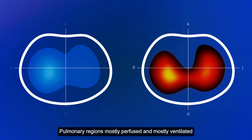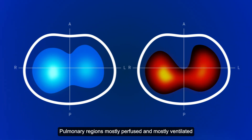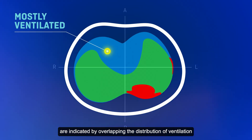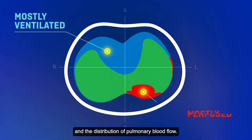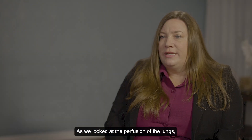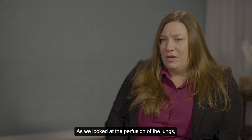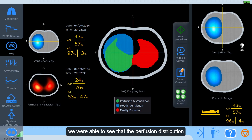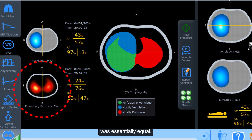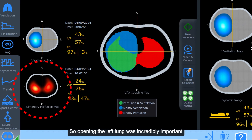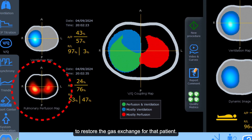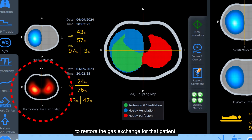Pulmonary regions that are mostly perfused and mostly ventilated are indicated by overlapping the distribution of ventilation and the distribution of pulmonary blood flow. As we looked at the perfusion of the lungs, we were able to see that the perfusion distribution was essentially equal. So opening the left lung was incredibly important to restore gas exchange for that patient.